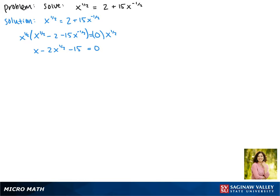So now we'll make a substitution of u equals x to the 1/2 power. Substituting this in gives us u squared minus 2u minus 15 equals 0.